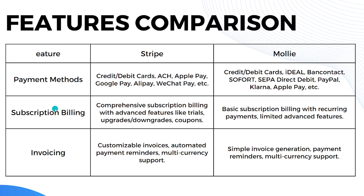When it comes to subscription billing, Stripe has comprehensive subscription billing with advanced features like trials, upgrades, downgrades, and coupons, while Mollie has basic subscription billing with recurring payments but limited advanced features.